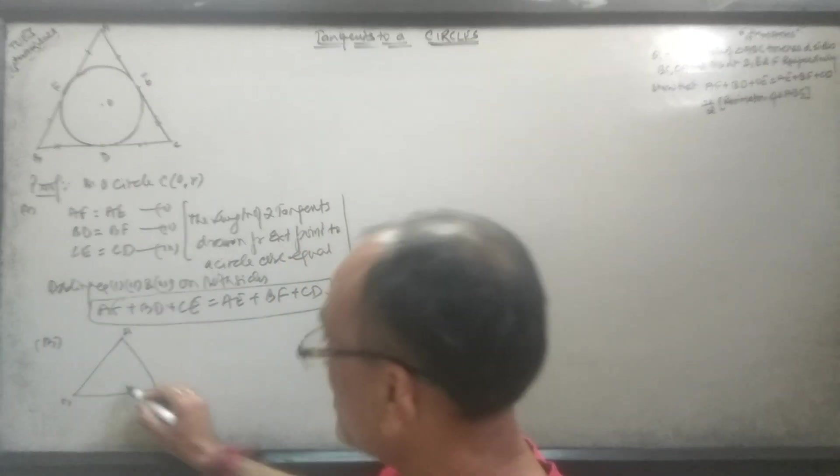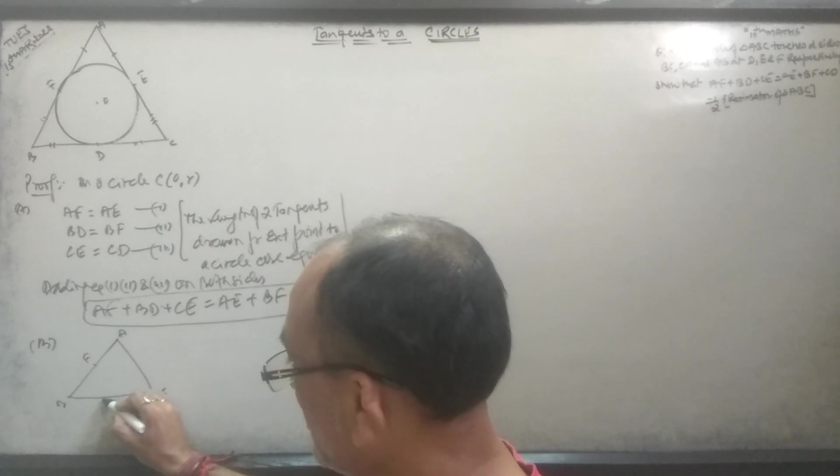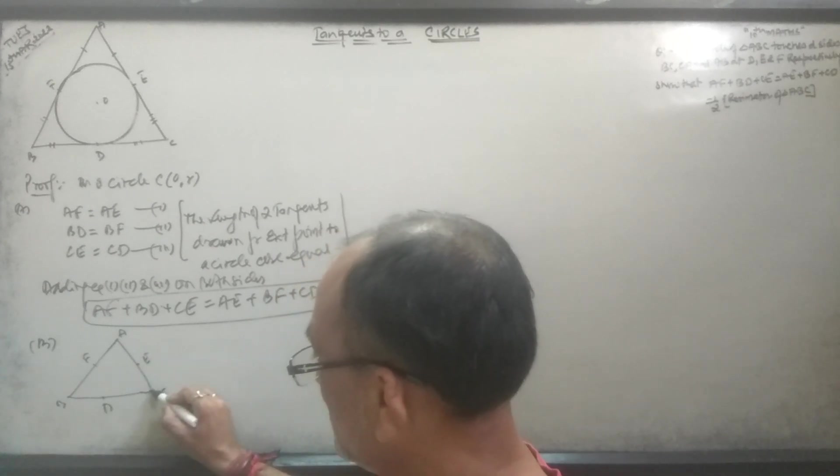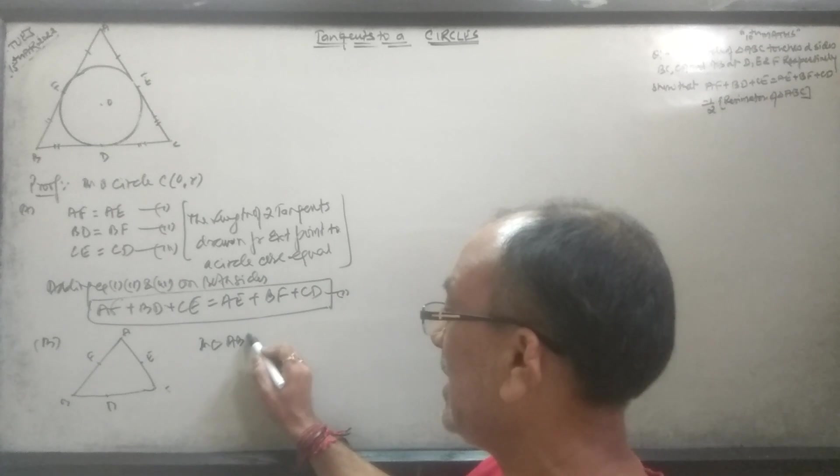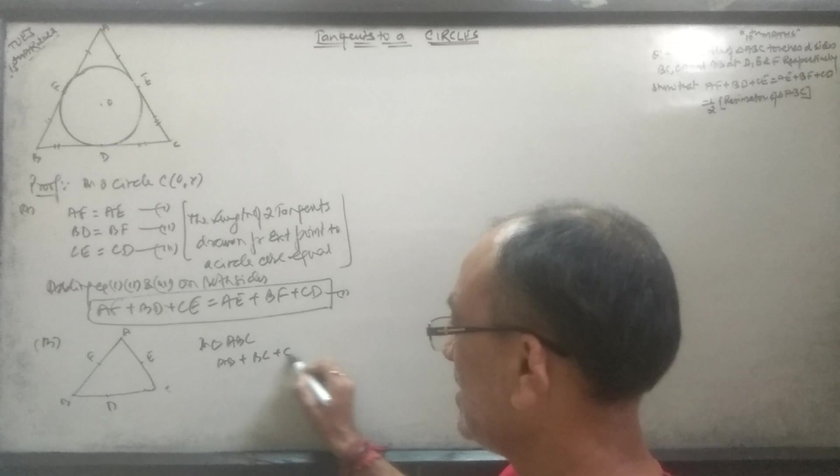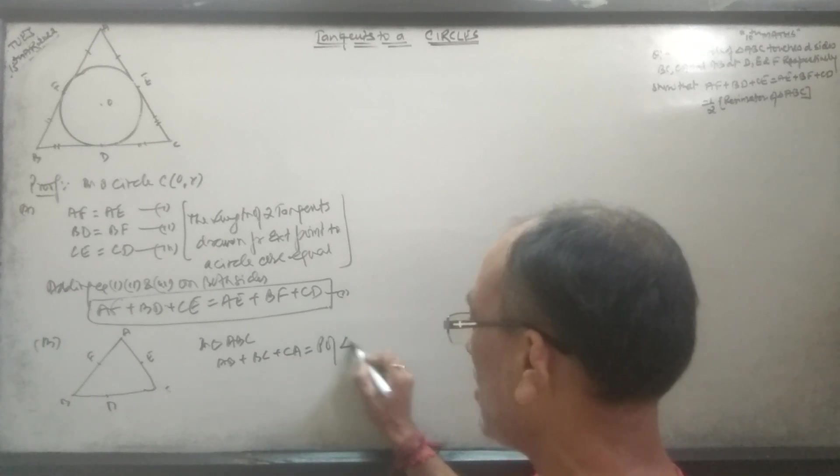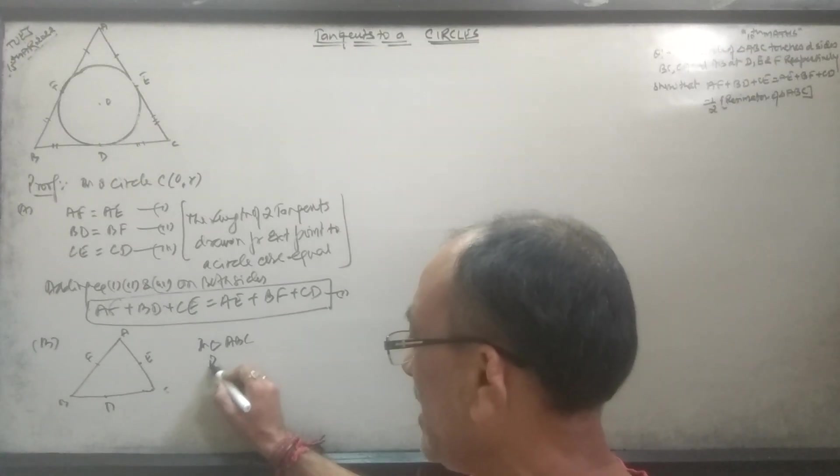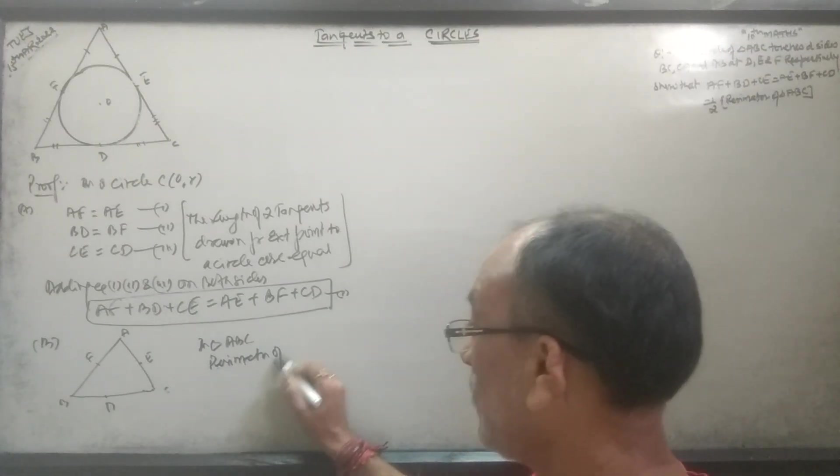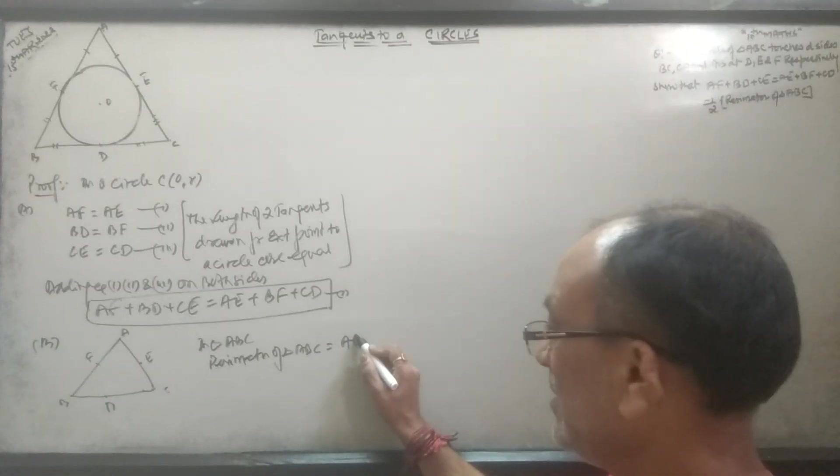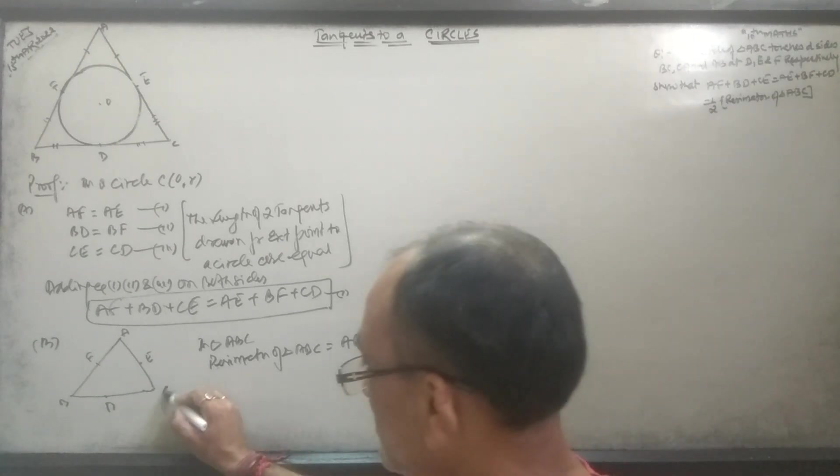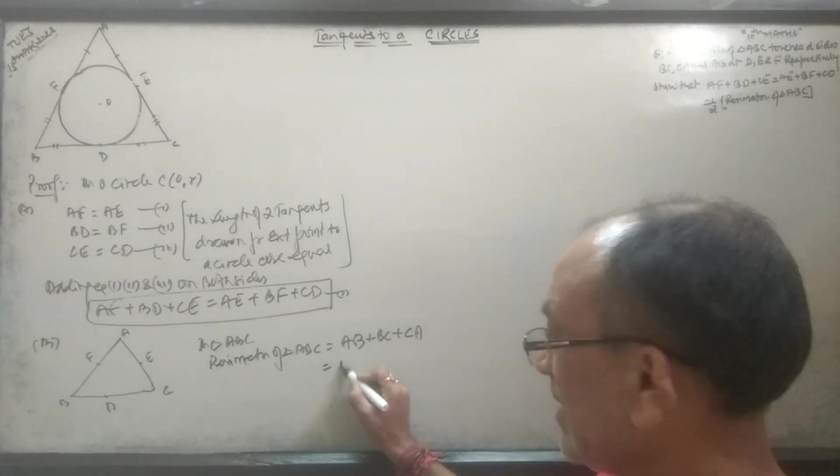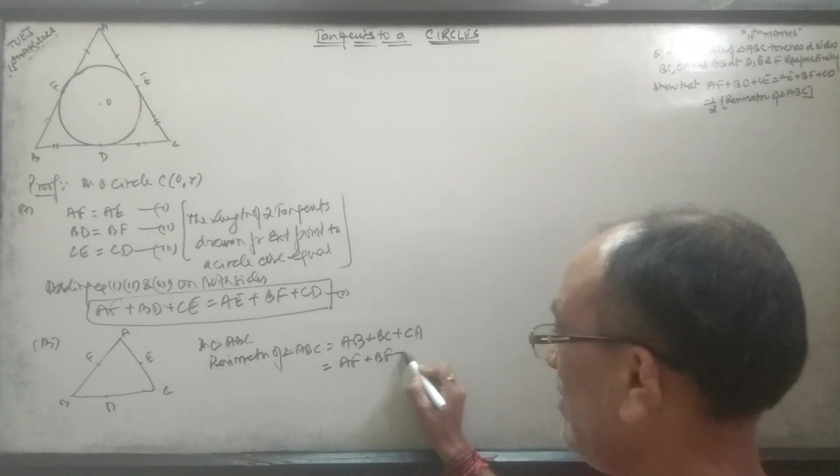The perimeter of triangle ABC equals AB plus BC plus CA. AB we can write as AF plus BF.